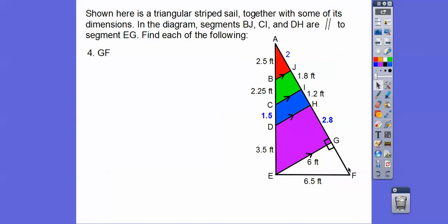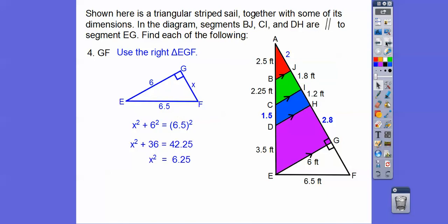Now it says find GF. So now we're not going to do what we've been doing. We're going to use this right triangle right here and use the Pythagorean theorem. Remember this is our hypotenuse, so this square plus this square equals this square. When we square those up and take the square root of 6.25, we get 2.5. So that length is 2.5.